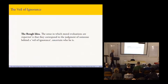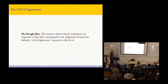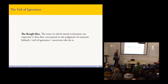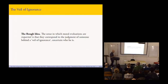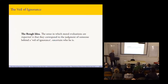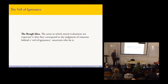The rough idea of what I'm going to call the veil of ignorance follows. The sense in which moral evaluations are impartial is that they correspond to the judgment of someone behind a veil of ignorance. The general thought here is that if you don't know who you are and you're trying to make a self-interested decision, then you have to take everyone's interests into account.